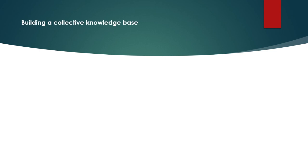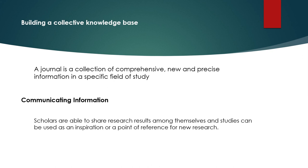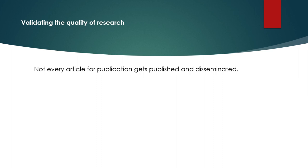The role of journals in scholarly communities may be summarized as follows. First, building a collective knowledge base: writing and publishing journal articles play an important role in forming an archive of knowledge, as a journal is usually a collection of comprehensive, new, and precise information in a specific field that undergoes strict peer review. Second, communicating information: as primary scientific literature, journals are a tool for scholars to communicate research results, contributing to the growth of the body of knowledge. Third, journals serve to validate the quality of research by maintaining research standards. Not every submitted article gets published, which is vital in maintaining the high quality of information shared within a specific community.